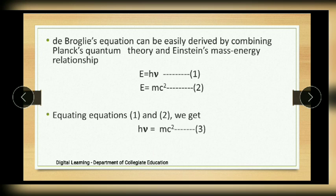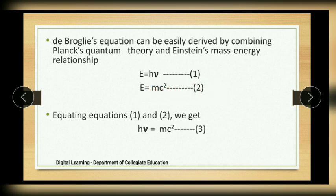Now let us derive the de Broglie equation. It can be derived by combining Planck's quantum theory and Einstein's mass-energy relationship. Planck's equation: E = hν (equation 1). Einstein's mass-energy relationship: E = mc² (equation 2). Since the left-hand sides are the same, we equate both to get hν = mc² (equation 3).